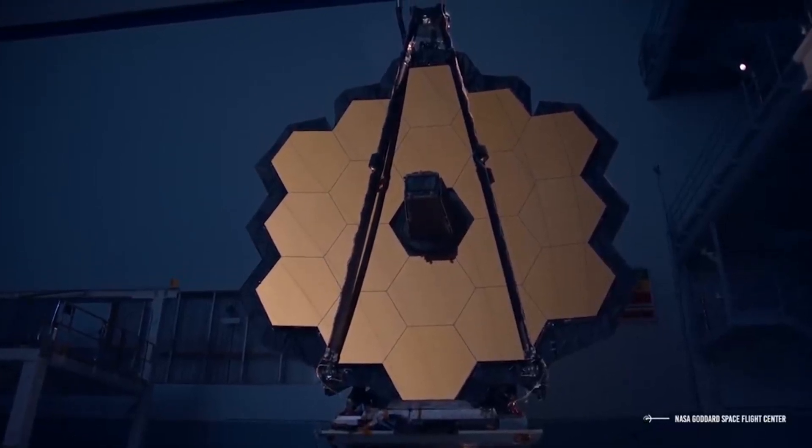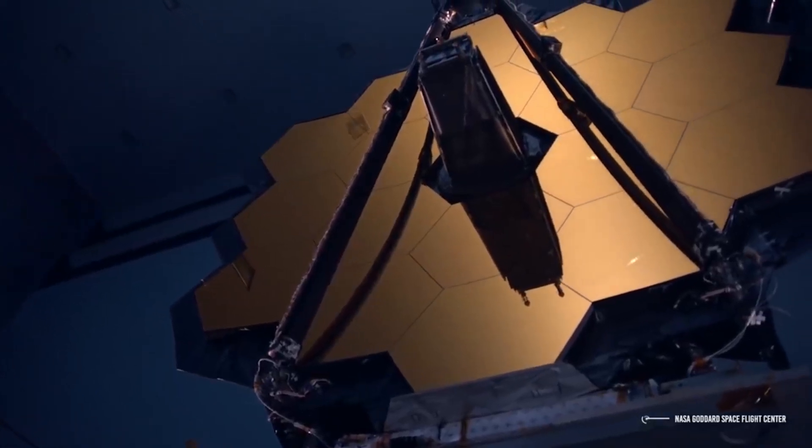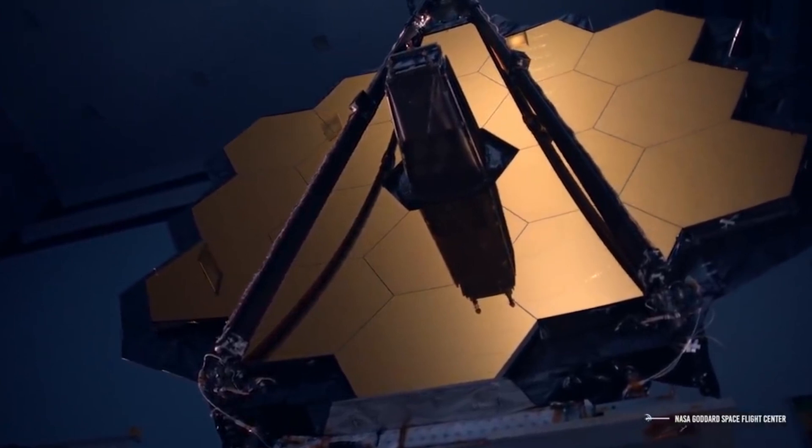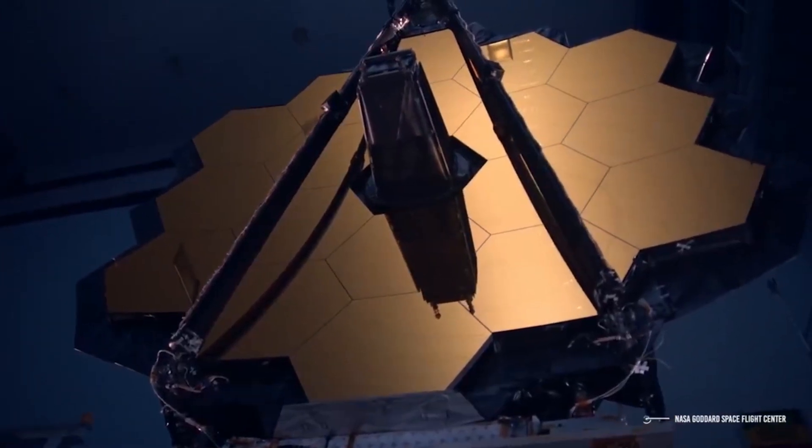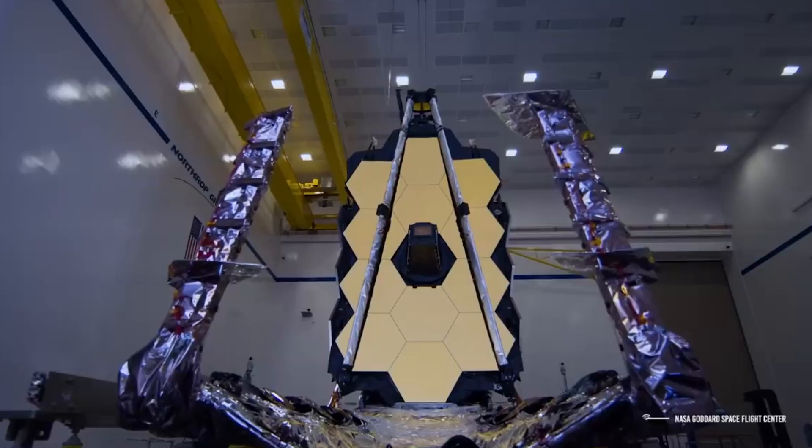Dubbed the golden eye of the space telescope, the mirror is made of lightweight beryllium. All 18 segments of the mirror are coated with an extremely thin layer of gold, which is extraordinarily reflective in infrared light.